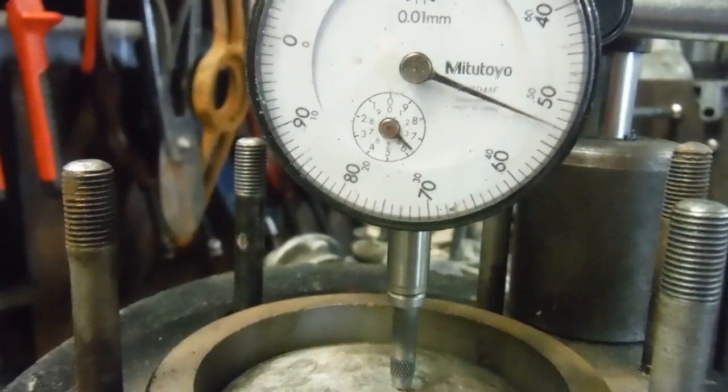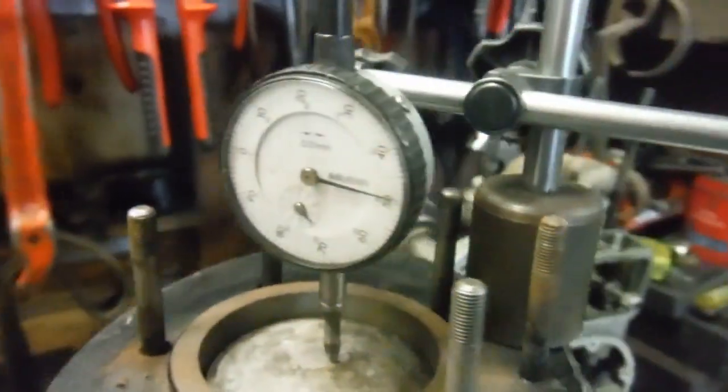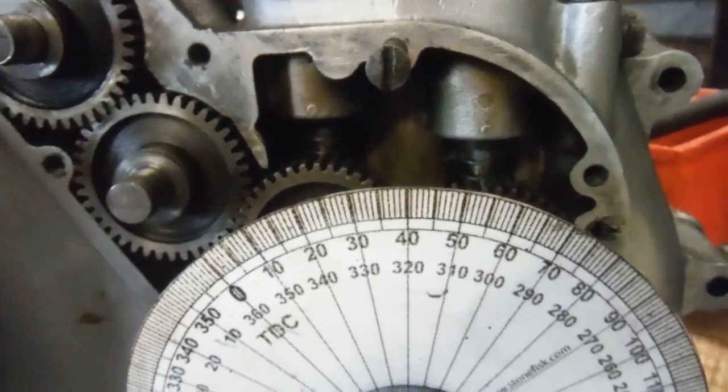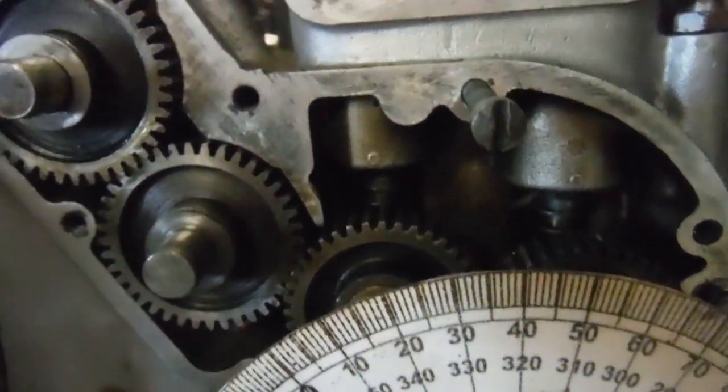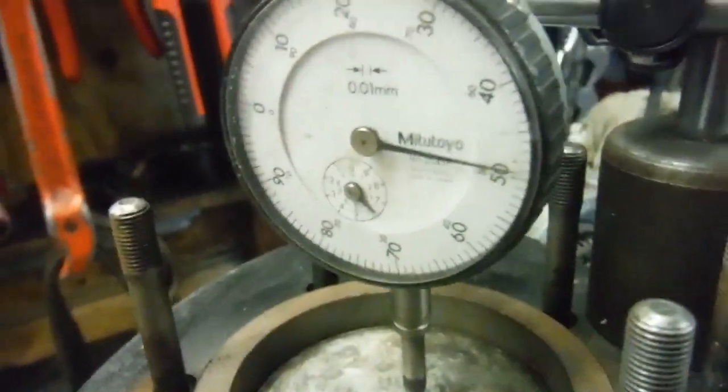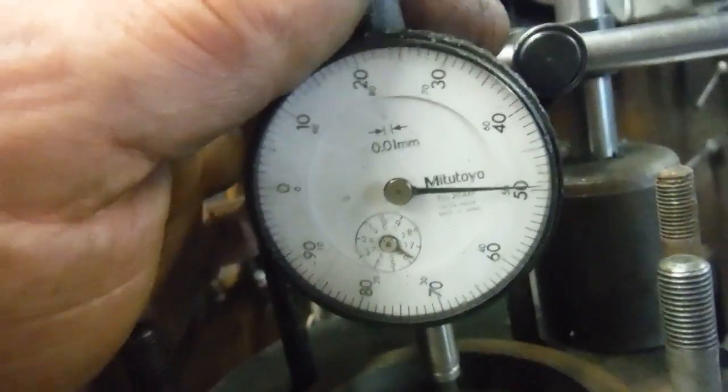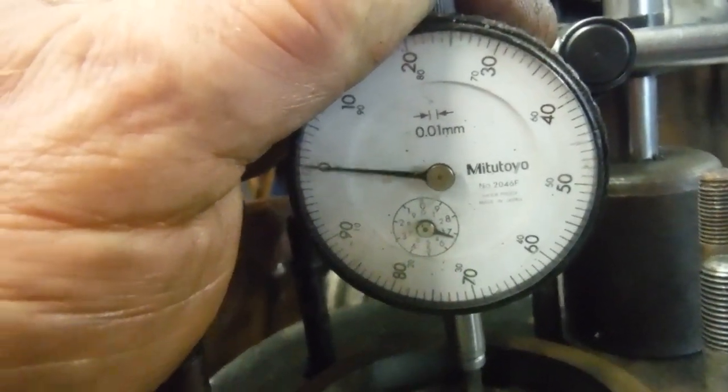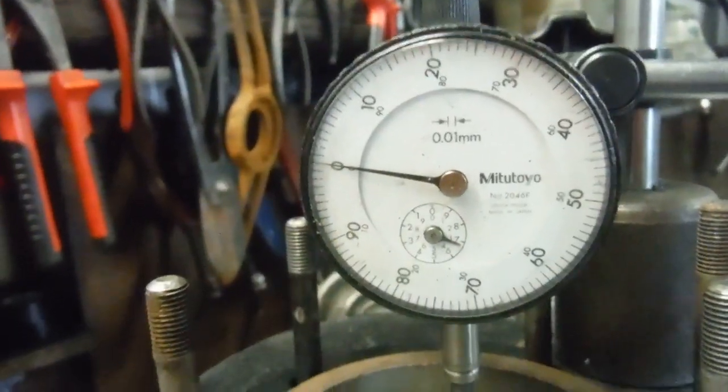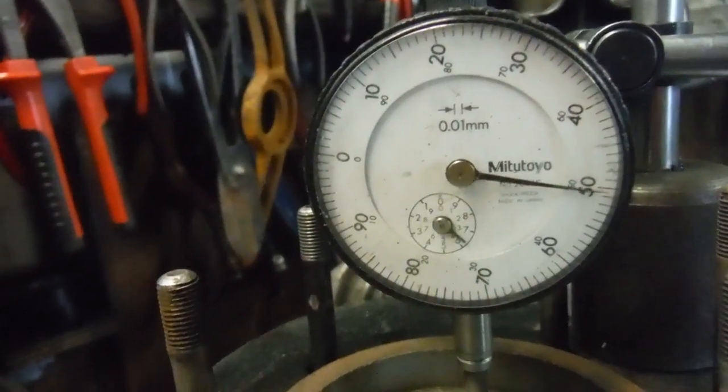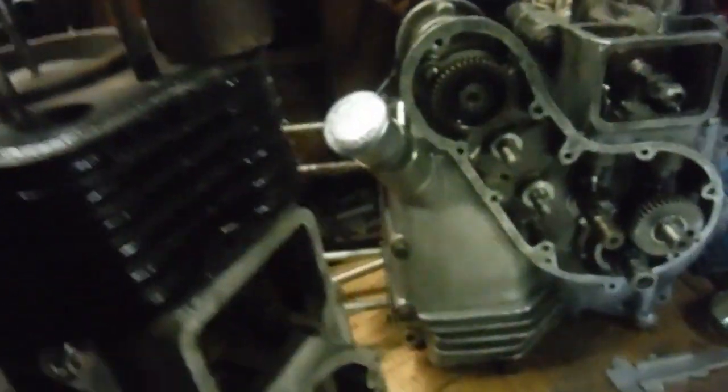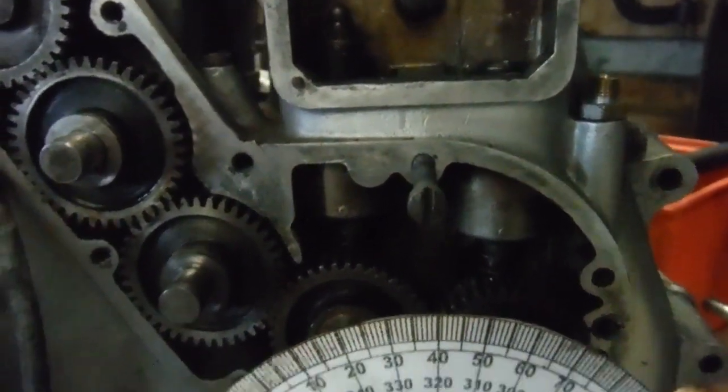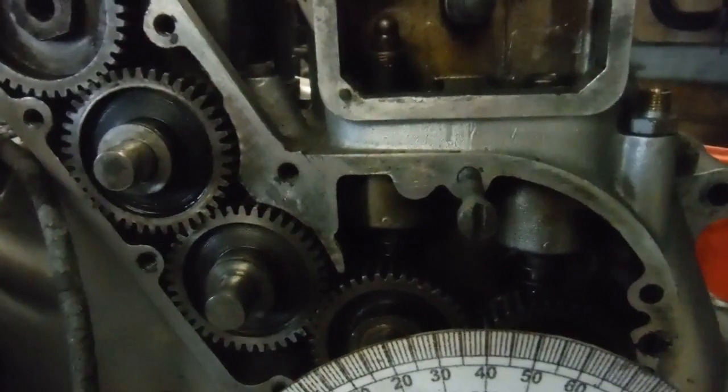We're ten point five millimeters before top dead center there, and we're just a whisker under 40 degrees on the degree wheel, probably about 38. So by the time we get that last point five of a millimeter, let's see if I can just tweak this a little, press it down, get it to naught maybe. Back it up that half again, that'll give us the 11 millimeters. That's 11 millimeters before top dead center.